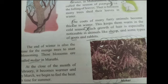The coats of many furry animals become thicker in winter. Furry animals — for example, sheep, goats and rabbits — have fur all over their body. This keeps them warm in cold season. In winter season, the coats of many furry animals become thicker and thicker. Such growth of hair is especially noticed in animals like sheep, goats and rabbits, to protect their body from the cold climate.